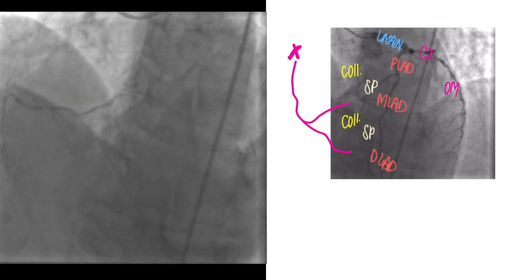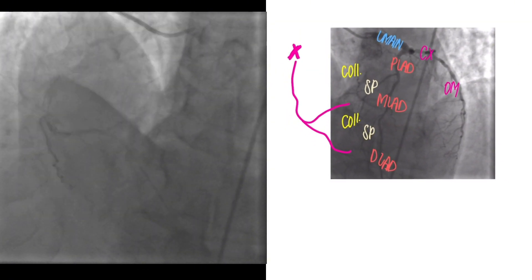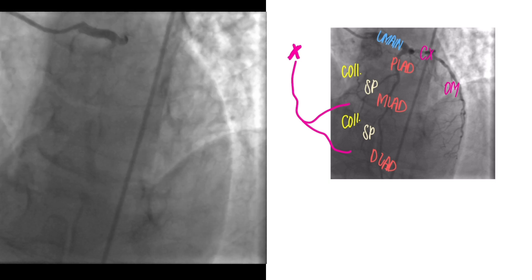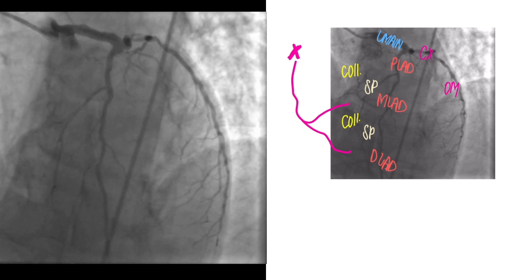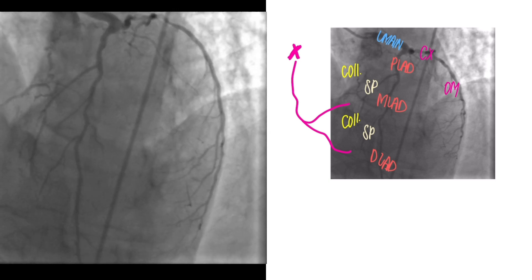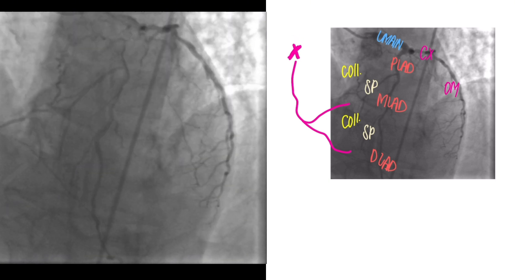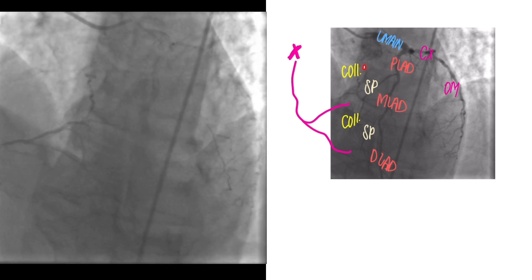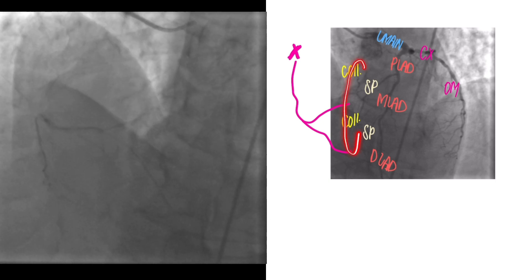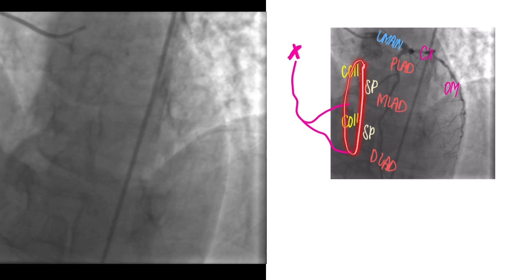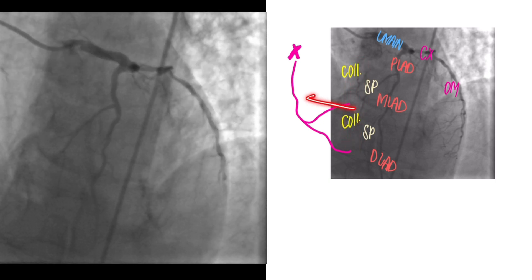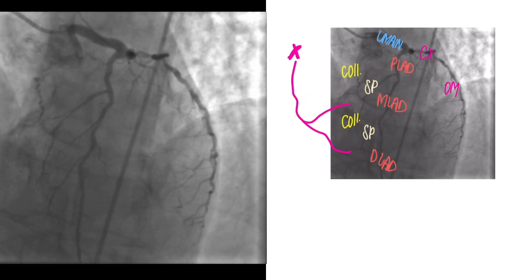When you start to see vasculature not normally where it's supposed to be, it's important to pan and follow it to see where it's going.